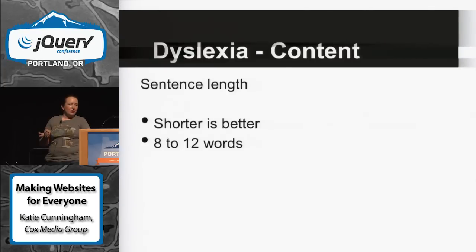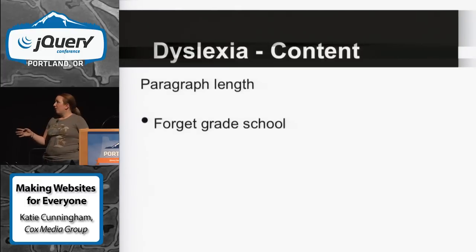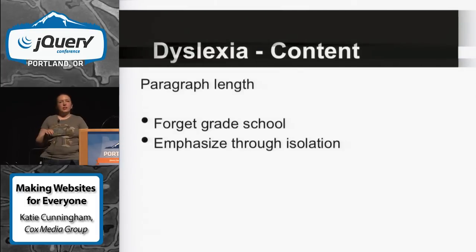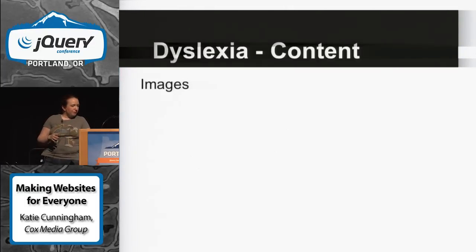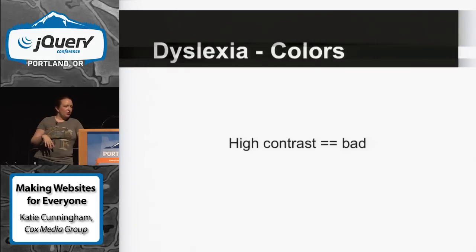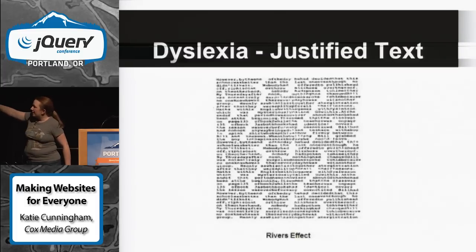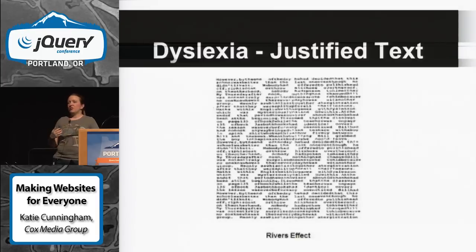For sentences, shorter is better — eight to twelve words is good. Avoid compound sentences; don't use semicolons, and don't double space after a period — we're not using typewriters. For paragraph length, forget grade school structure. You emphasize through isolation: if a sentence is very important, pull it out on its own. Avoid long paragraphs. They like images because they anchor the reader and allow scanning up and down a page. Also, high contrast equals bad for dyslexia — don't use pure black and pure white; go for dark gray and light gray. Justified text creates rivers, and people with dyslexia report seeing them move — they see colors and everything dancing around. This is why we don't use justified text.